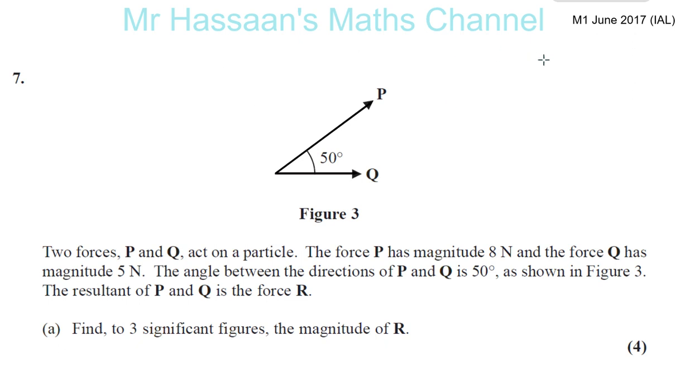Now we have June 2017 M1 IAL, a question about vectors and resultant vectors. Here we have two vectors, P and Q, two forces P and Q act on a particle. This is about forces and resultant forces.